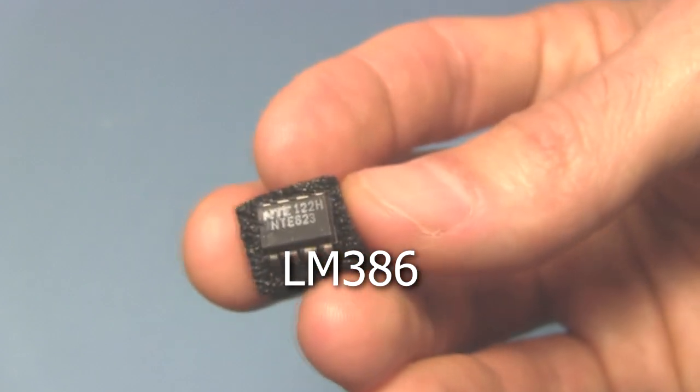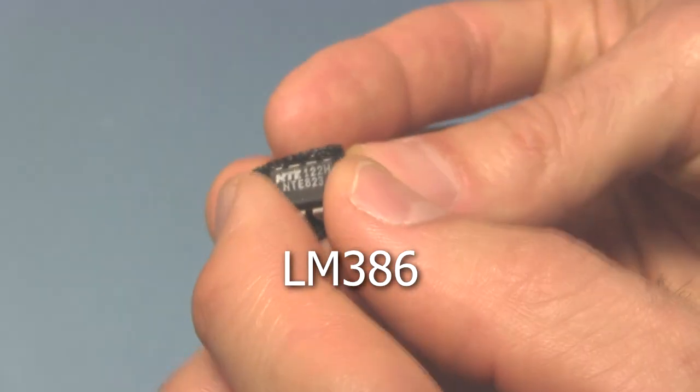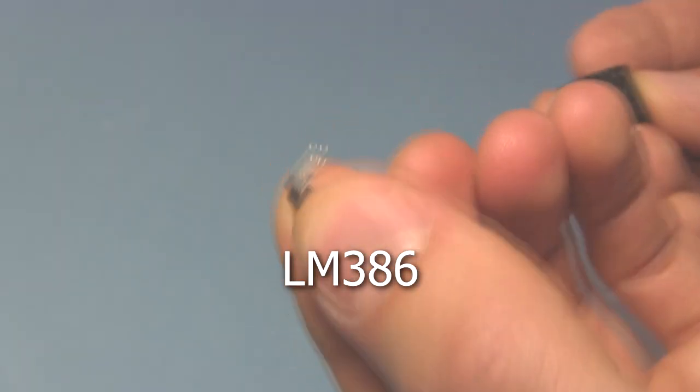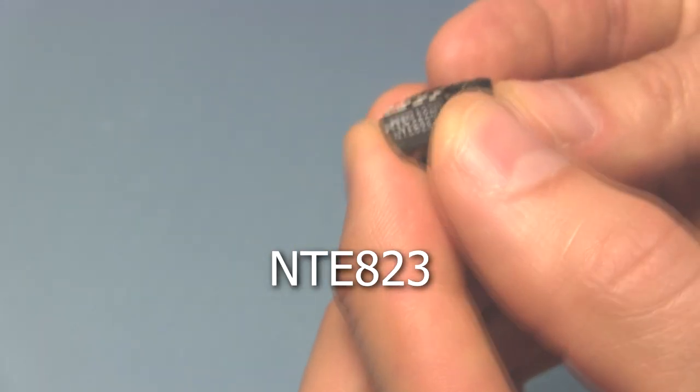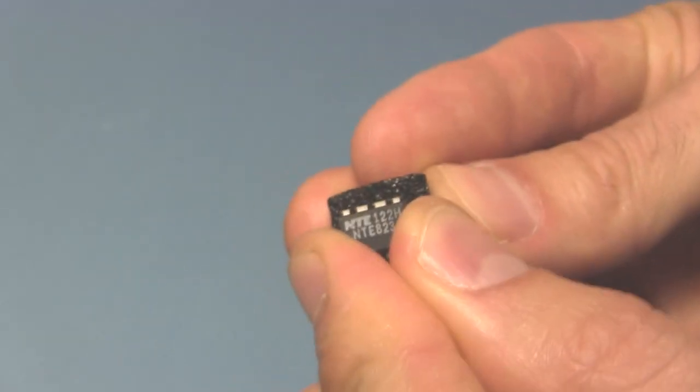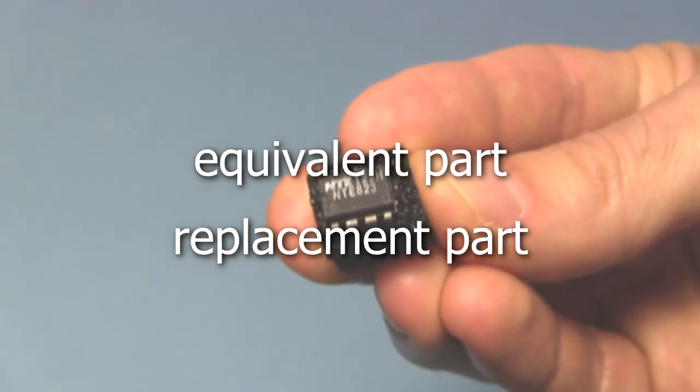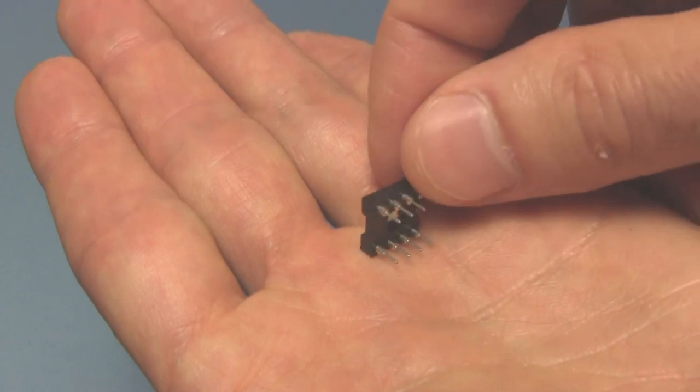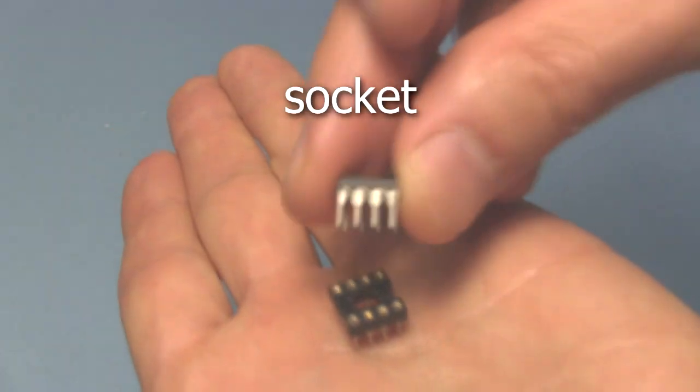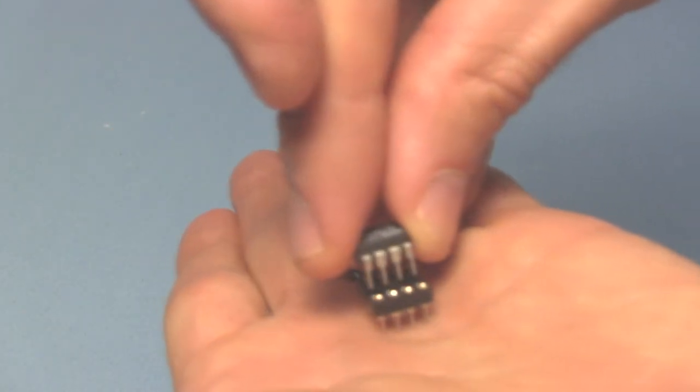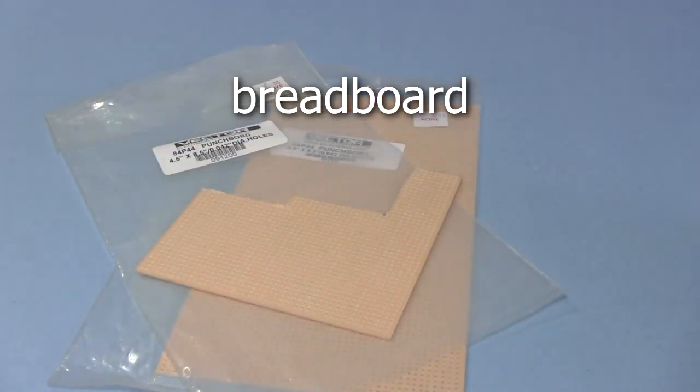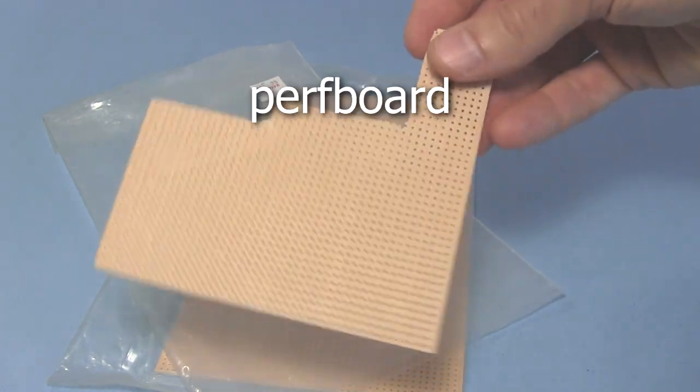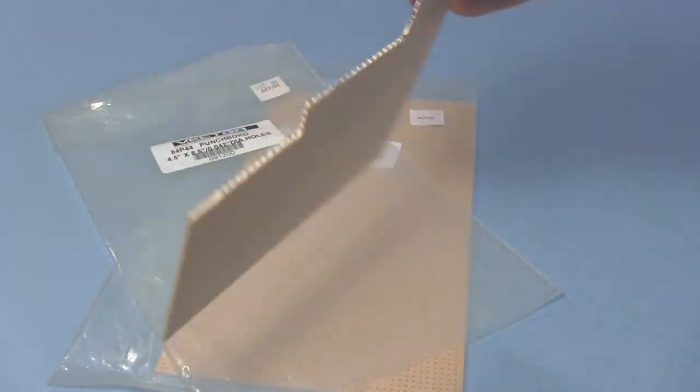And an LM386 amplifier chip. My local electronics store didn't have an LM386, but they had an equivalent one called NTE823. If you can't find an LM386, just look for an equivalent or replacement part. I didn't want to solder directly to the pins on the chip, so I got a socket for plugging it into. I'll solder to the socket's pins instead. I want this one to be permanent, so instead of doing my usual breadboarding, I got this perf board for soldering everything onto.